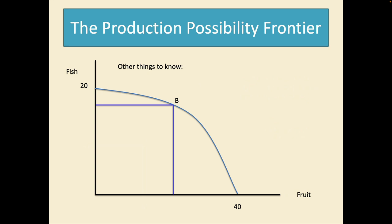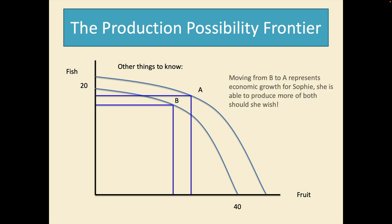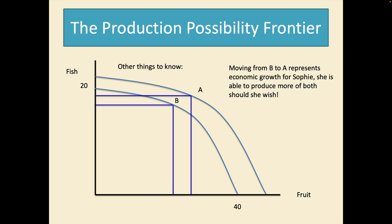Other things to know. Starting here we can add in a new production possibility frontier to the right of our original one and a move from B to A represents economic growth for Sophie or any economy. She is able to produce more of both should she wish. This can also stand as a description for economic growth for a locality such as a village, a town or a nation or even the world.